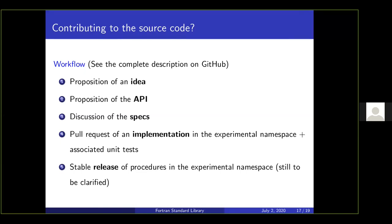The workflow has five steps. First, propose an idea on GitHub and the community will discuss it. When there's a vast majority interested, you can propose an API — from there the spec will be defined. Once the spec is defined, it's time to open a pull request for the implementation, which goes into the experimental namespace. We also require that any new procedure be associated with a unit test. The last step — which we haven't reached yet — would be to release procedures in a stable version of stdlib; this still needs to be discussed.